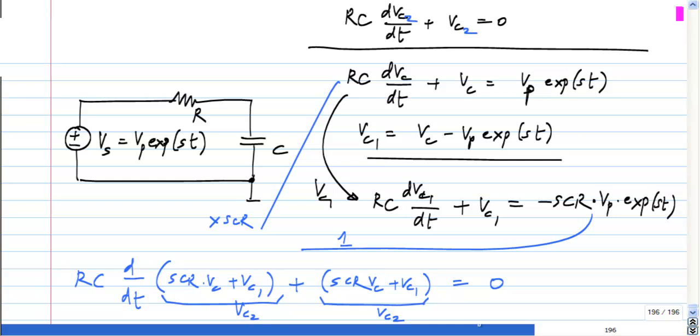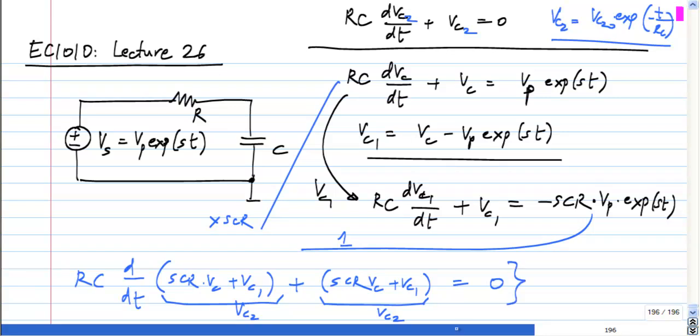What is the solution to Vc2? RC dVc2/dt + Vc2 is 0. Vc2 is some constant times exponential minus t by RC. So now from this find the solution for Vc which is what I want. Just back substitute all the variables and find it only in terms of Vc, please do that. Just some silly algebraic tricks to get the right hand side to be 0, that is all. What is the solution?